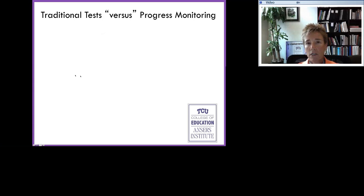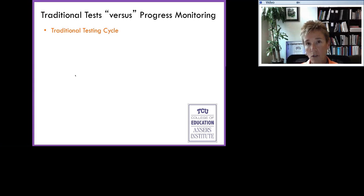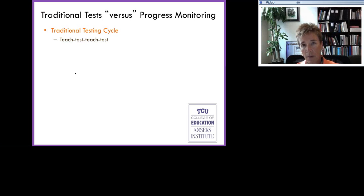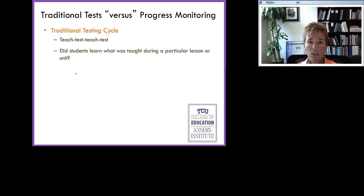Let me give a couple more examples of what I mean by traditional versus progress monitoring. In a traditional testing cycle, we taught and then we tested — to see if students learned what we had taught. If they did, we taught some more, some different content, and then we tested to see if students mastered that content. Our question was, did students learn what was taught during a particular lesson or unit? As you can hear, that was very summative in nature.